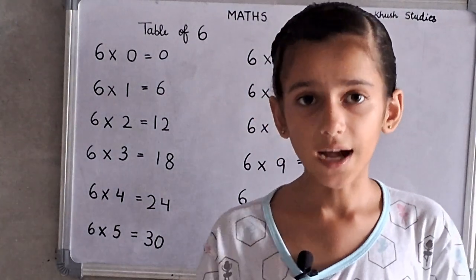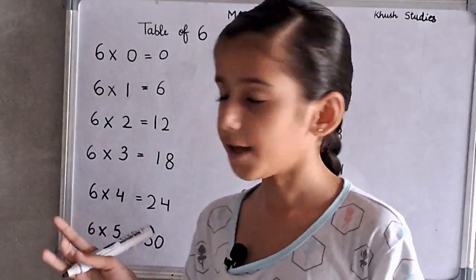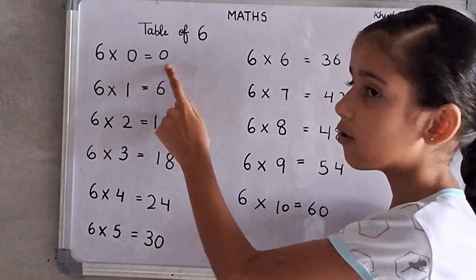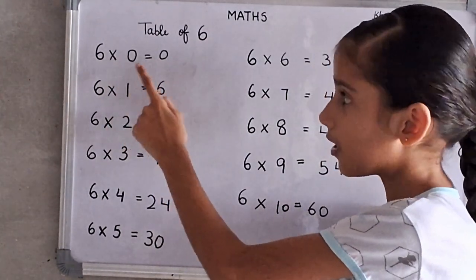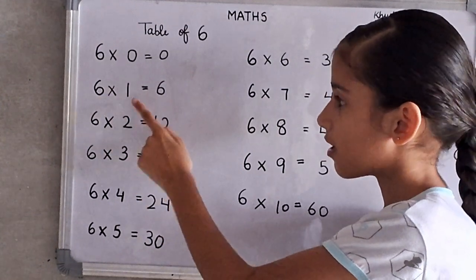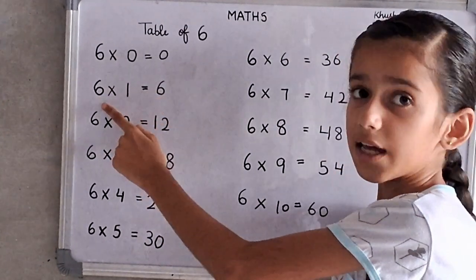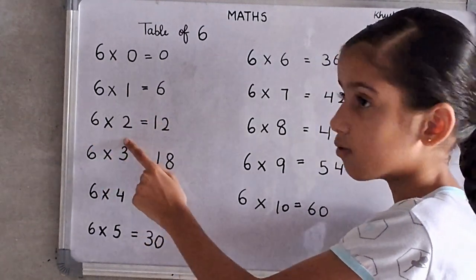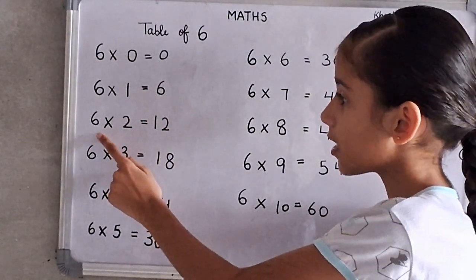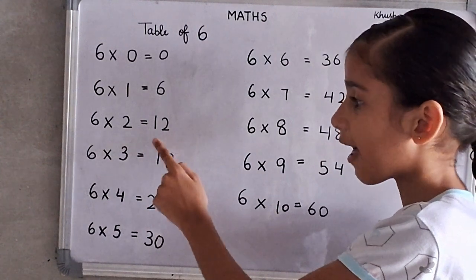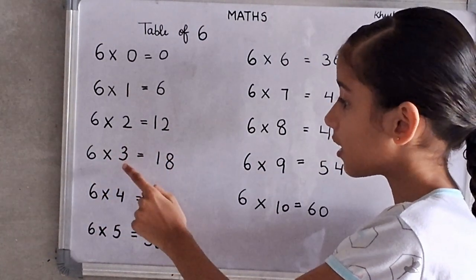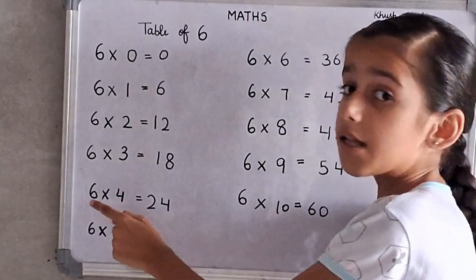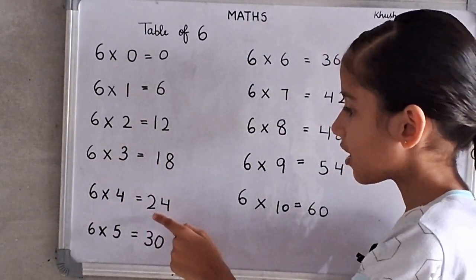Now, we will learn the table of 6. 6 zeros are 0. 6 zeros are 0. 6 ones are 6. 6 ones are 6. 6 twos are 12. 6 twos are 12. 6 threes are 18. 6 threes are 18. 6 fours are 24.